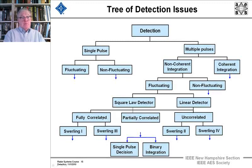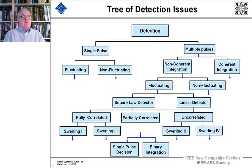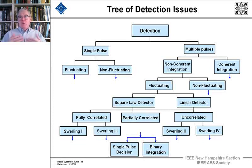There are partially correlated and quite correlated backgrounds, and one example is RAIN. If you don't have a Doppler processing technique and you try to do detection in RAIN, which is correlated, you don't get the full value of non-coherent integration that you'd get with uncorrelated pulses. Then we have four different classes of Swerling fluctuating targets, which have to do with the distribution of the fluctuation of the target's voltage or power.